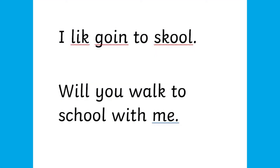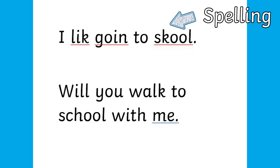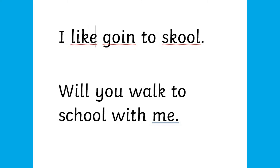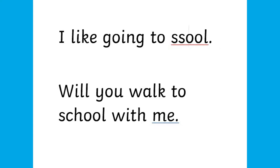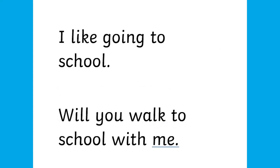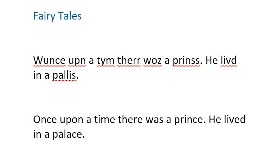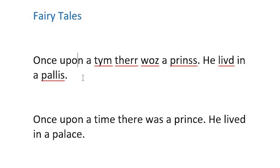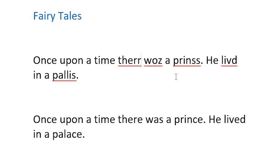Another skill explored in this unit is editing text. Discuss how a red line can show a spelling mistake and a blue line can show a grammatical error. However, this isn't foolproof and children still do need to check their work. Practice moving the cursor using the mouse or arrow keys and using backspace to delete. This lesson pack includes some sentences to edit. Discuss: are there any clues that there is a problem with this sentence?